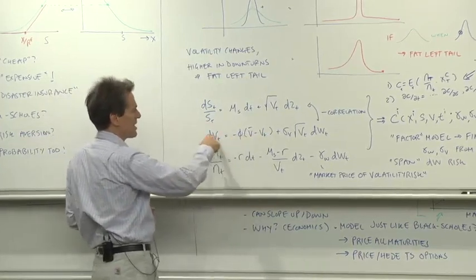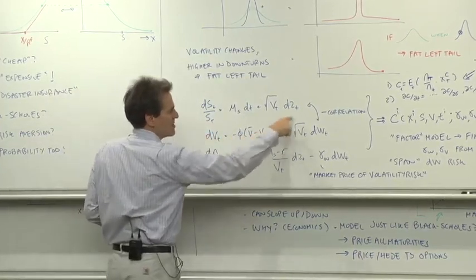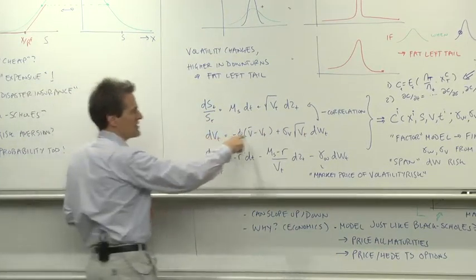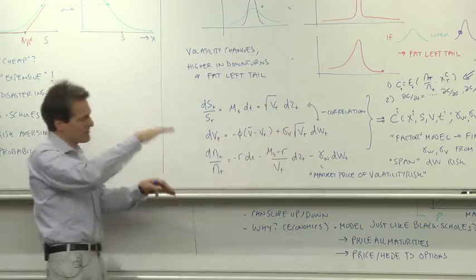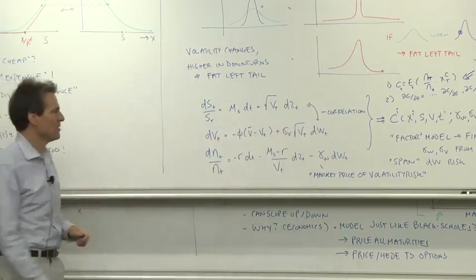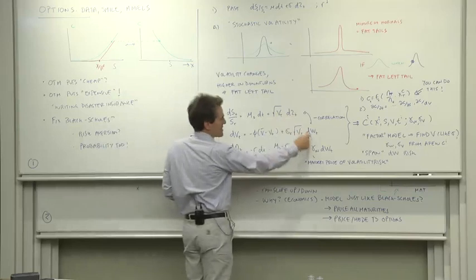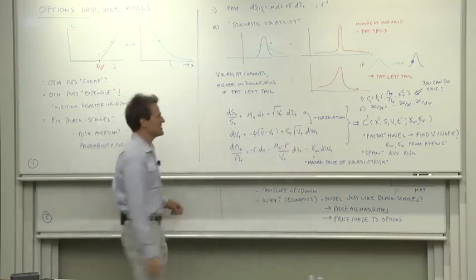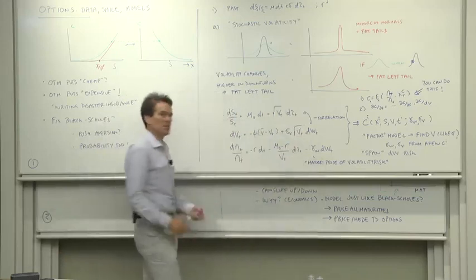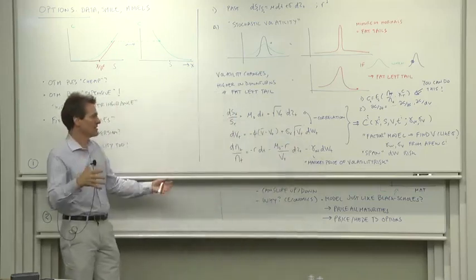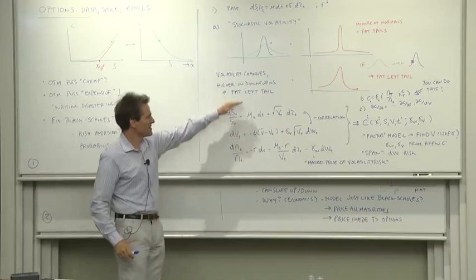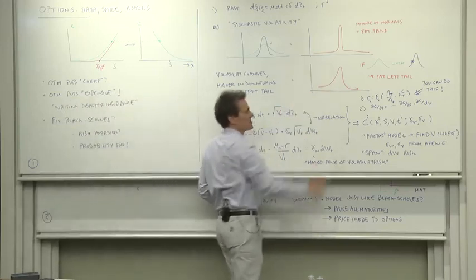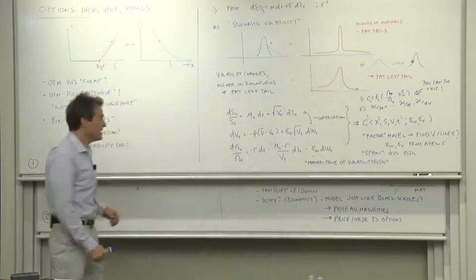So this is an AR1 process with a square root term there as well. This just lets volatility wander through time. The square root nature of it keeps volatility a positive number. And let's make dw and dz correlated with each other. So when there's a bad shock to dz, there's a big shock to dw. In bad times, volatility goes up. That kind of process is exactly going to generate this kind of distribution, which we need. So let's go.